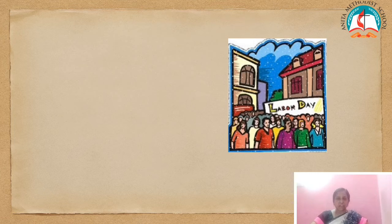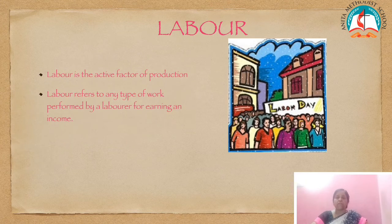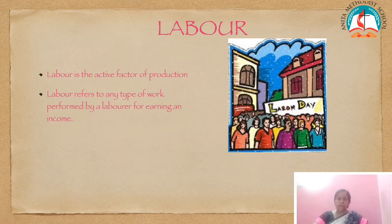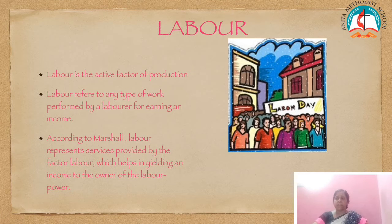The next factor of production is labor. Labor is an active factor of production. Labor refers to any type of work performed by a laborer for earning an income or which yields an income — it refers to any work undertaken for securing an income or reward. It may be manual or intellectual. Manual refers to the work done by a farmer, cook, or rickshaw puller. The work done by a doctor, engineer, or teacher is called intellectual. According to Marshall, labor represents services provided by the factor labor, which helps in yielding an income to the owner of the labor power.